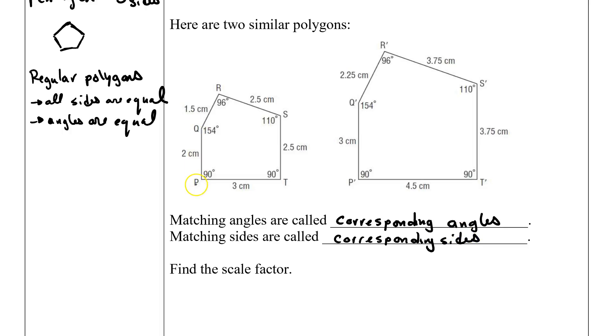And matching sides are called corresponding sides. So QP is a corresponding side to Q prime P prime. And angle R is a corresponding angle to R prime.